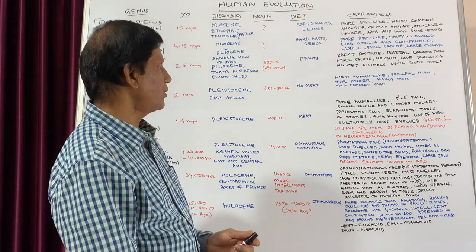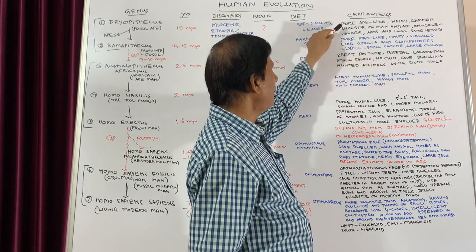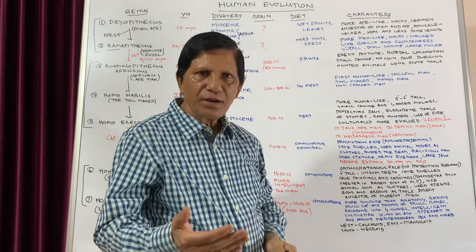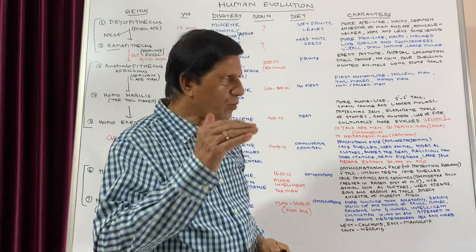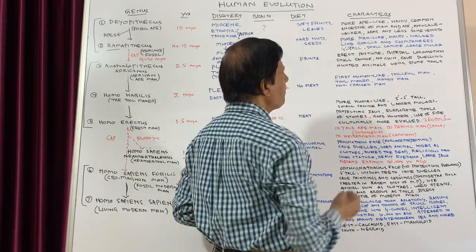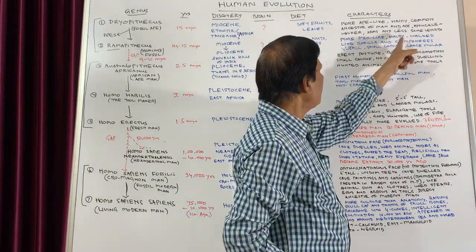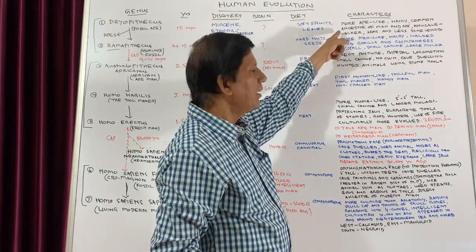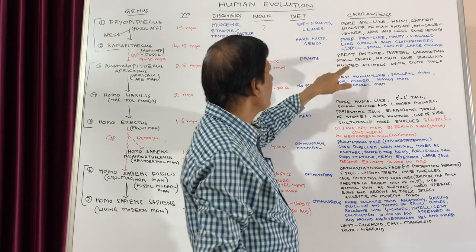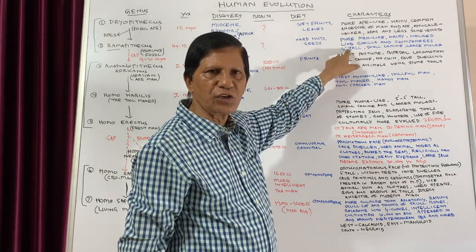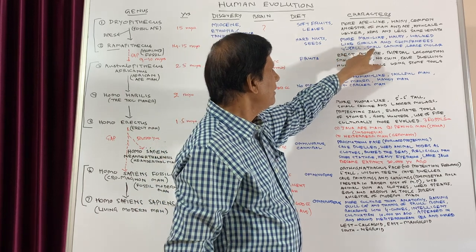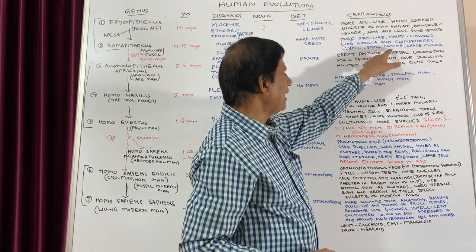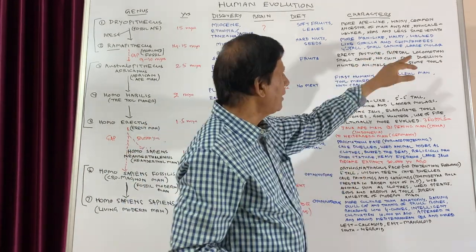Coming to the characters of Ramapithecus: they were more man-like, compared to Dryopithecus which was more ape-like. The body was hairy and they worked like gorillas and chimpanzees — a slight advancement from Dryopithecus. They were four feet tall, with small canines and large molars.